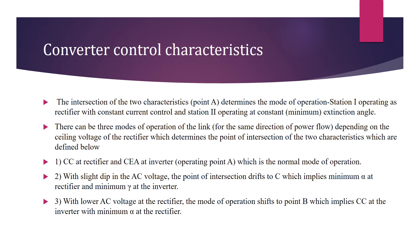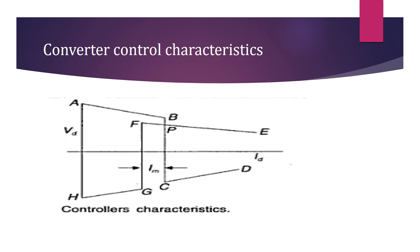From A to B, the first station acts as rectifier, whereas at the same time the second station will be acting as inverter. From C to D, the first station is acting as inverter and the second station will be acting as rectifier. Here from A to B, the converter is controlled by the constant current control technique.